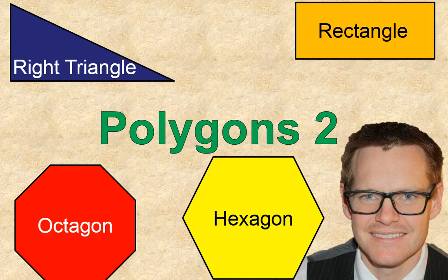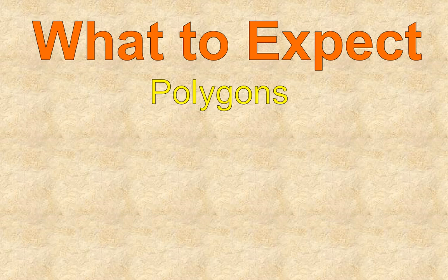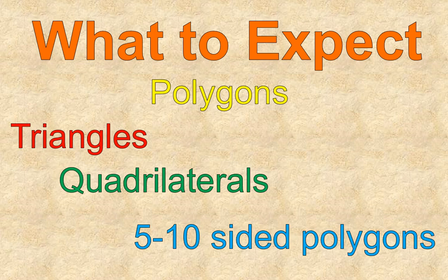This is a second lesson on polygons, where we're going to talk briefly about what a polygon is, then we're going to focus on triangles, quadrilaterals, and then some other five to ten-sided polygons, common ones that you might see, just so that you know the names of them and how to classify them.